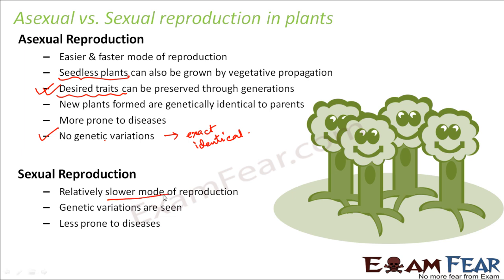Sexual reproduction is obviously a slower mode — in asexual reproduction many plants are formed quickly, but sexual reproduction is quite slow. However, in sexual reproduction new traits are seen — genetic variations occur, meaning new characters not present in either of the parents can appear in some new plants. Sexual reproduction is also less prone to diseases because the mechanism involved has some built-in protection against diseases.